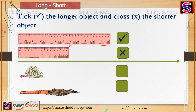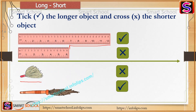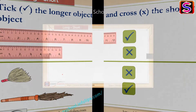Let's see one more example. There is a first object and a second object. We can say the second object is longer and the first object is shorter. We compare with their length — this object is a broom and it has more length, so it is longer and the other is shorter.